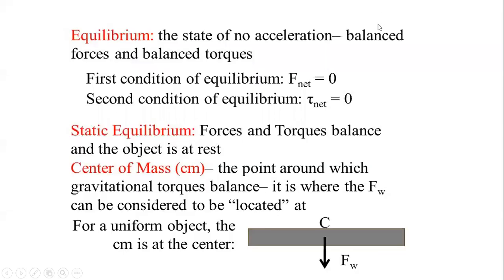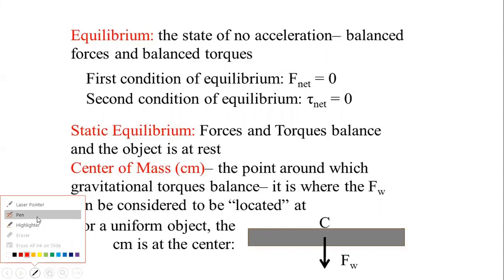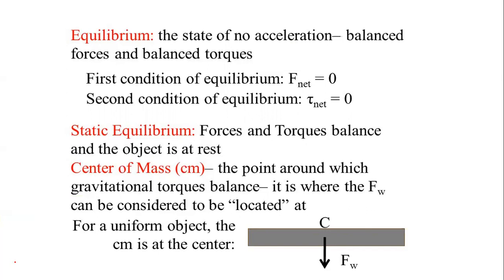Equilibrium, as discussed in the last lecture, is a state of no acceleration where forces and their effects — like moments and torque — are balanced. Static equilibrium means the state of rest of the body. If the no-acceleration condition is due to complete rest, it is static equilibrium; if due to constant velocity, it is dynamic equilibrium.